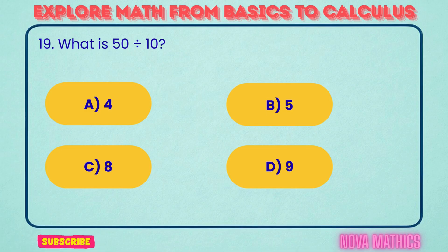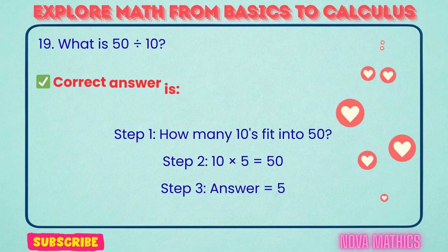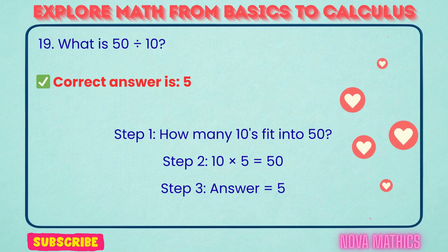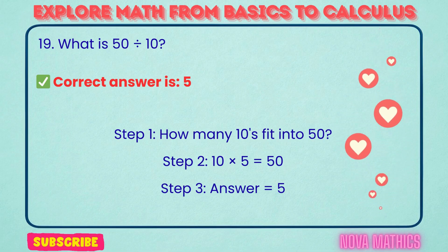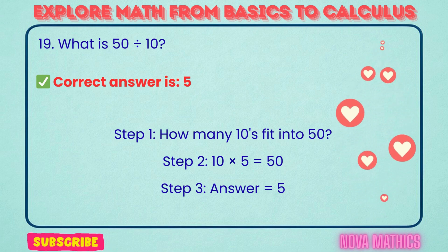19. What is 50 divided by 10? Correct answer is 5. 50 divided by 10 equals 5. We find this because 10 times 5 is 50.